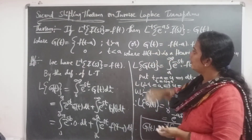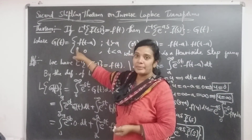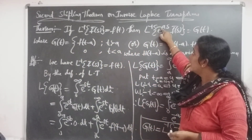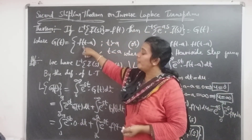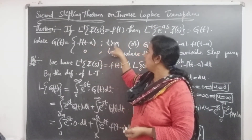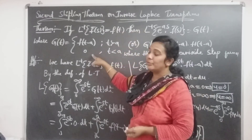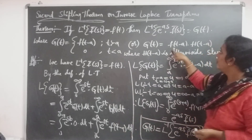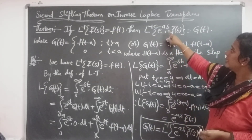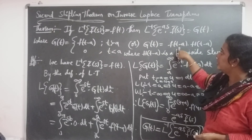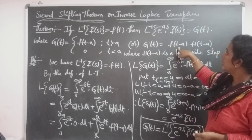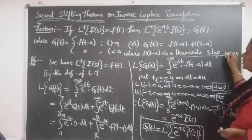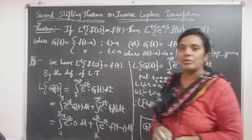So g of t is in the set form: f of t minus a for t greater than a, and 0 for t less than a. That is also equal to f of t minus a times h of t minus a, where h of t minus a is the Heaviside step function. We derived this by splitting into two partitions, applying limits, and changing the variable. Okay, thank you.